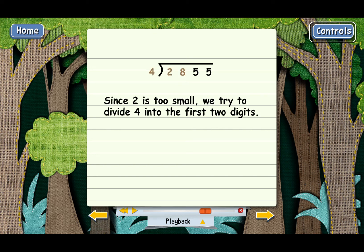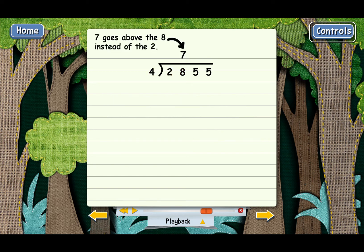That's right. Notice the 7 goes above the 8 instead of the 2. That's because we divided into 28, not 2, so be careful about that. The next step is to multiply. What's 7 times 4? You got it. Now we subtract. What's 28 minus 28?